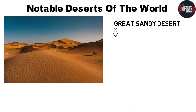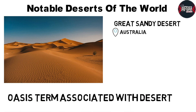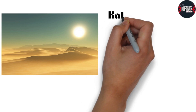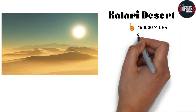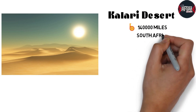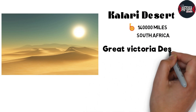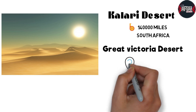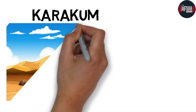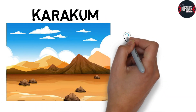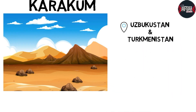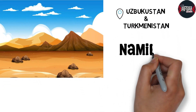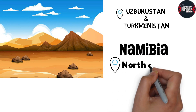The Great Sandy Desert is situated in Australia. The Kalahari desert stretches over 1,40,000 miles in South Africa. The Great Victoria Desert is also situated in Australia. The Karakum desert is located in Uzbekistan and Turkmenistan. The Namib desert is situated in North Africa.